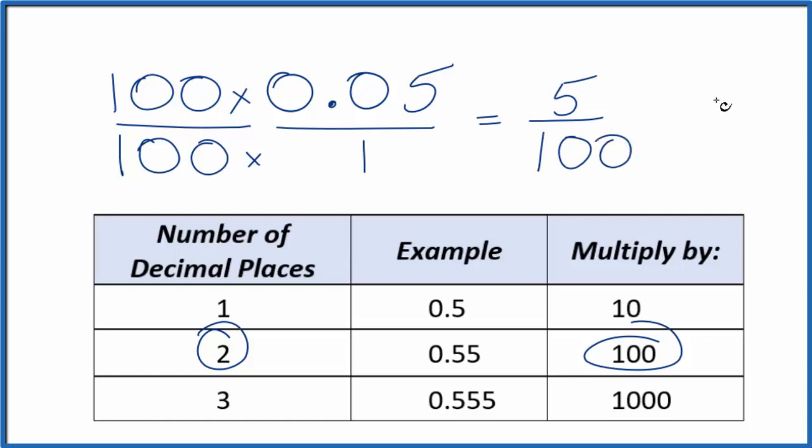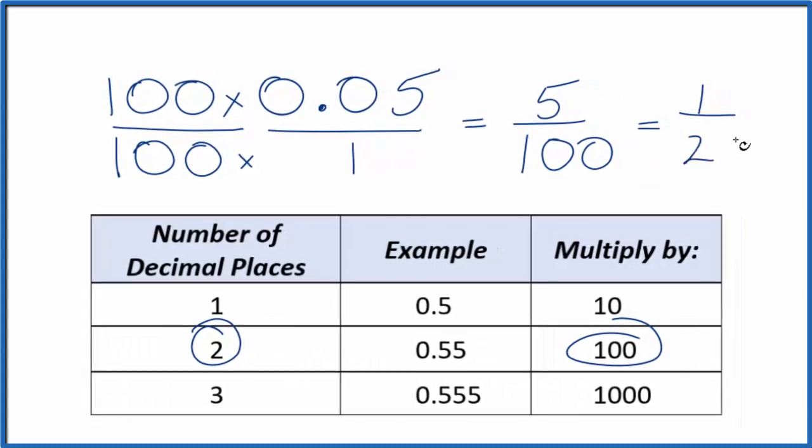So now we have a fraction, and we could divide 5 in the top and the bottom. 5 divided by 5, that's 1, and then 100 divided by 5, that's 20.